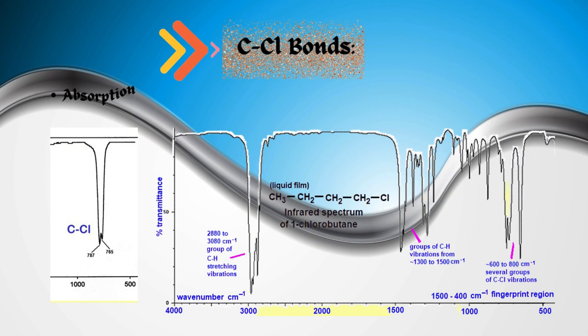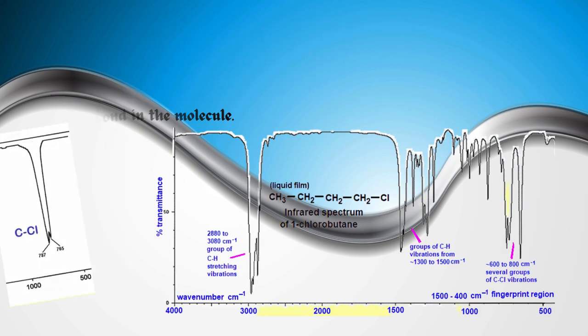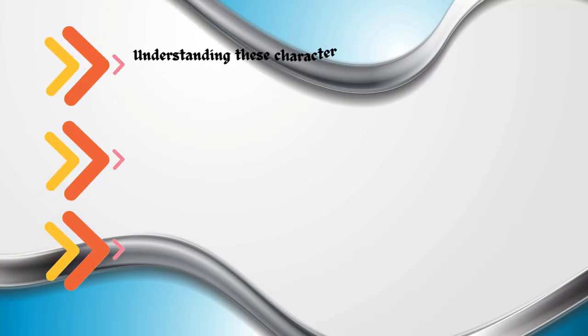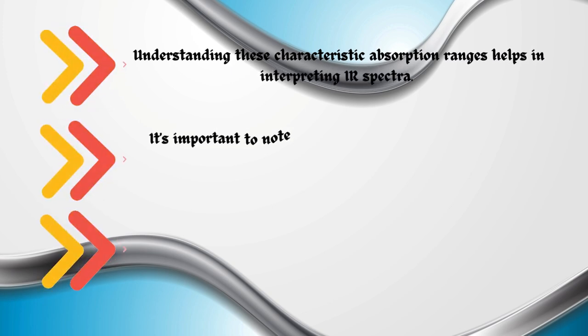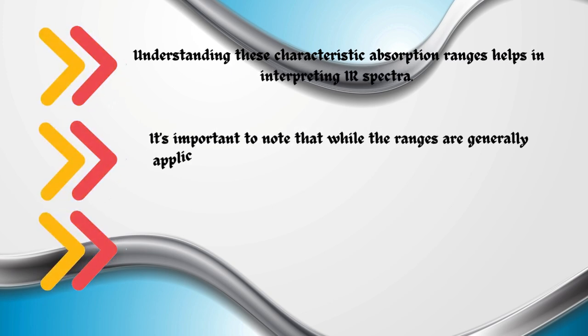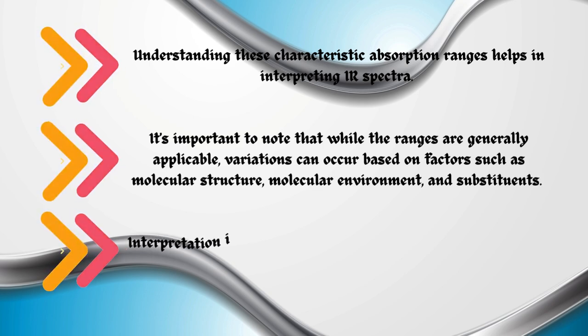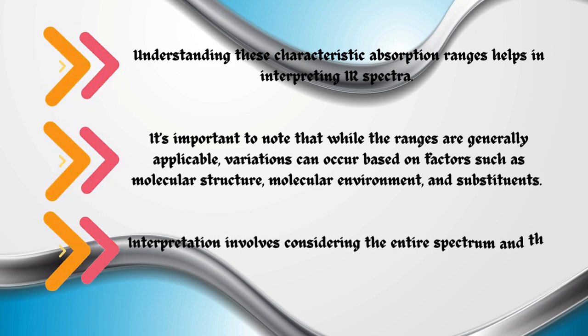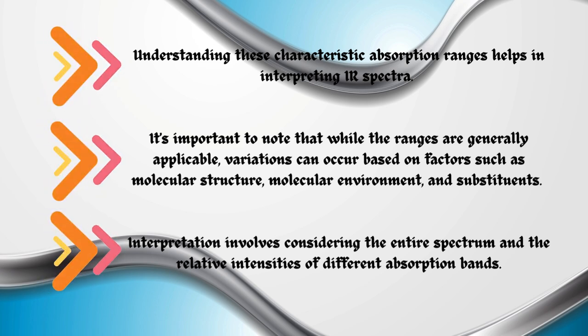Carbon and chlorine CCl bonds. Absorption band in the 600 to 800 per centimeter range can indicate the presence of a CCl bond in the molecule. Understanding these characteristic absorption ranges helps in interpreting IR spectra. It's important to note that while the ranges are generally applicable, variations can occur based on factors such as molecular structure, molecular environment, and substituents. Interpretation involves considering the entire spectrum and the relative intensities of different absorption bands.